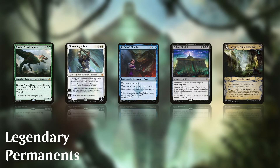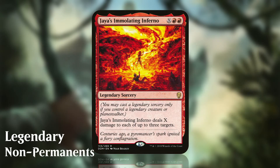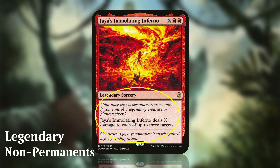Finally, with the release of Dominaria in 2018, we got a new card type: legendary sorcery. Since this is a new type of card, the stipulations are printed on the Dominaria cards to remind you of the card's restrictions. You can only cast a legendary sorcery if you control a legendary creature or planeswalker.